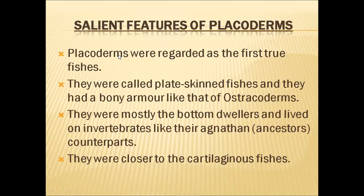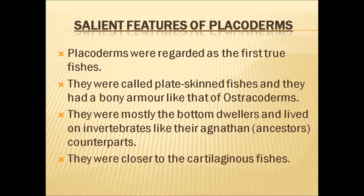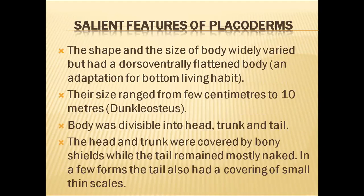Coming to the salient features of placodermians: they are regarded as the first true fishes and are also called plate-skinned fishes, as they had bony armour plates similar to ostracoderms. They were mostly bottom dwellers and lived on invertebrates, like their agnathan counterparts and ancestors. They were closer to cartilaginous fishes. The shape and size of these organisms varied greatly — from a few centimetres to up to 10 metres in length.